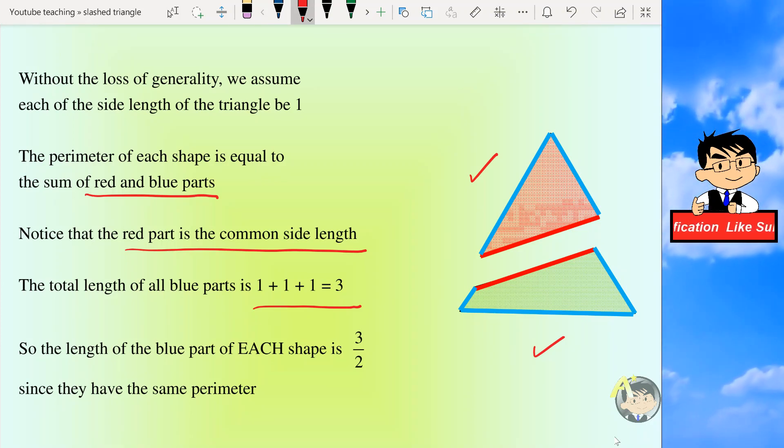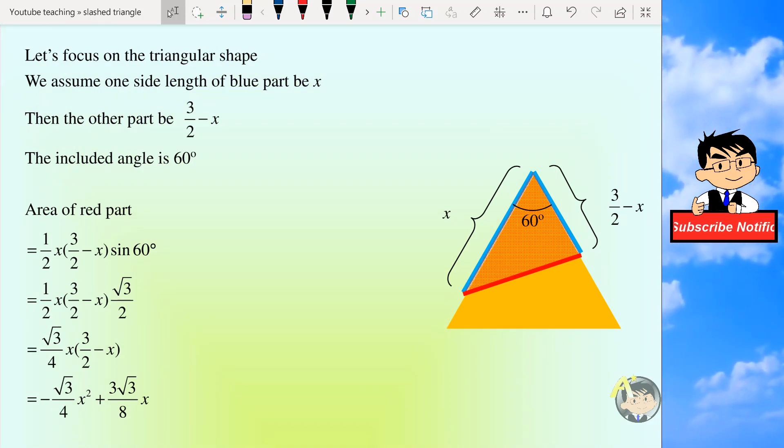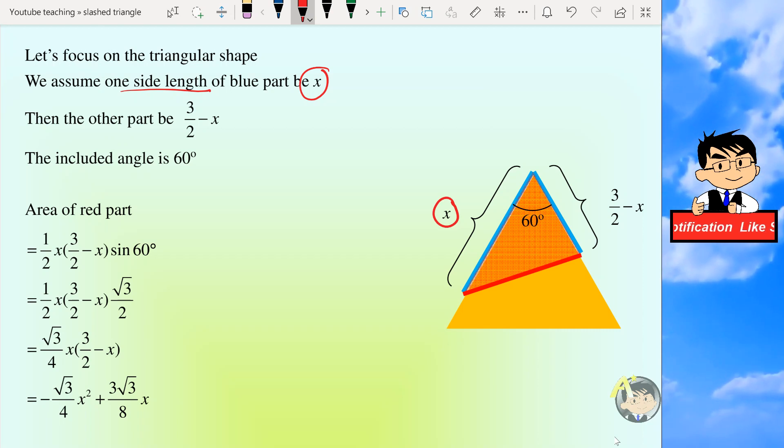And the total length of all blue parts will be the total perimeter of the equilateral triangle, and so for each shape the blue part will be 3 over 2. So we'll focus on the triangular shape. For easy calculation, we'll assume one side length of the blue part to be x, which is here, and the other part which is 3 over 2 minus x, which is here, and the included angle is 60 degrees. So we can use the area of triangle which is half AB sine theta.